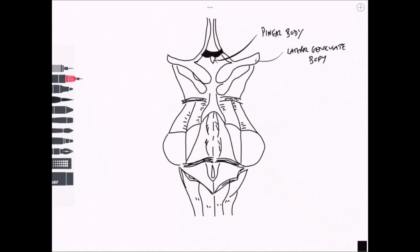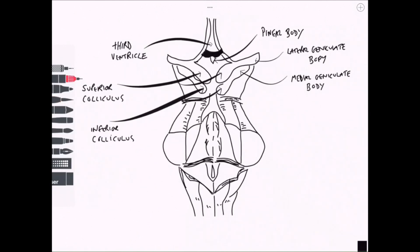Starting with the pineal body, we can see the lateral and the medial geniculate body of the thalamus. We've got the third ventricle up there above the pineal body, the superior colliculus and the inferior colliculus.